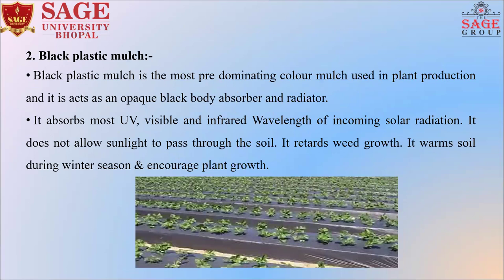The second is black plastic mulch. Black plastic mulch is the most predominating color mulch used in plant production. It acts as a black body absorber and radiator, absorbing most ultraviolet, visible, and infrared wavelengths of incoming solar radiation. It does not allow sunlight to pass through to the soil, thereby retarding weed growth. Black plastic mulch warms the soil during winter season, which increases plant growth.